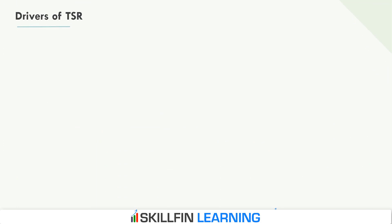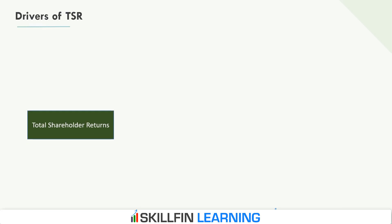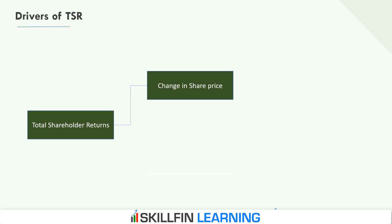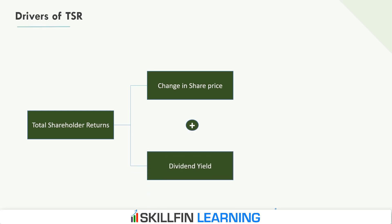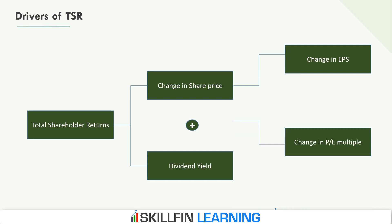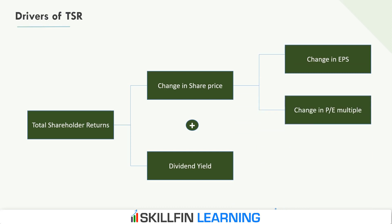Let us discuss the drivers of total return to shareholders. Total shareholder returns are driven by change in share price plus the dividend yield earned during the holding period. We can break change in share price into change in earnings per share and change in PE multiple. So share price change is driven by EPS, which is earnings per share, and price-to-earnings multiple, which represents investor expectation.